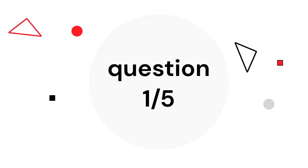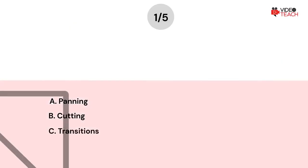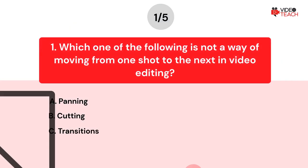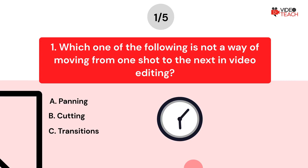Question number one. Which one of the following is not a way of moving from one shot to the next in video editing? Option A: Panning. Option B: Cutting. Option C: Transitions. Now you have about 15 seconds to think about your answer.